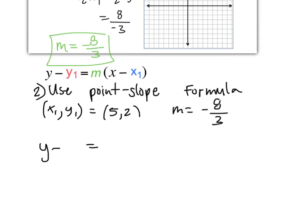We write down the skeleton first: y minus something equals the slope times x minus something. What's our y1? Our y1 is 2. Our slope is negative 8 over 3, and our x1 is 5.